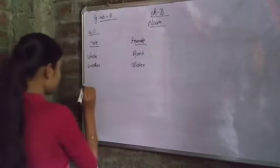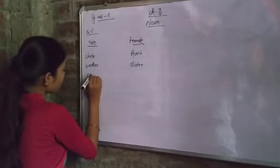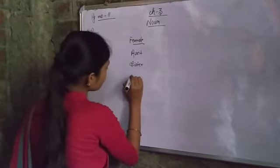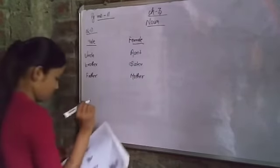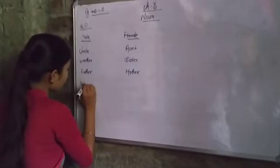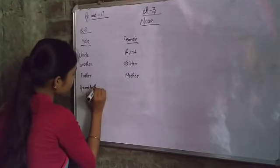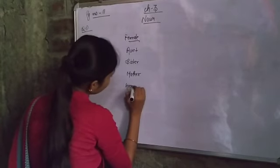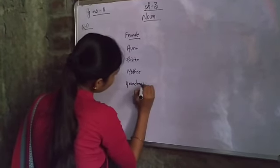Continuing the table: brother — sister, father — mother, grandfather — grandmother. These are all common nouns that also indicate gender, either masculine or feminine.